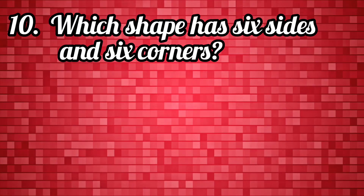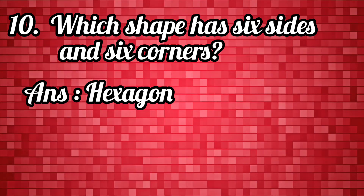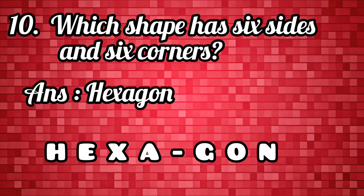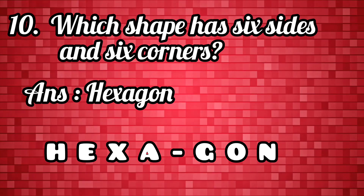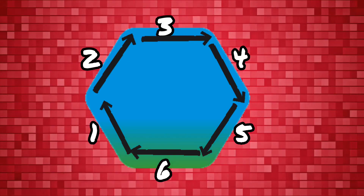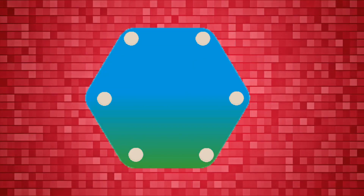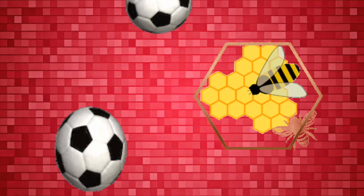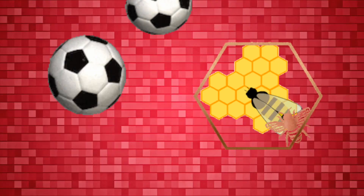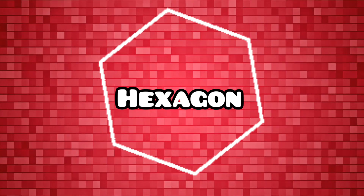Which shape has six sides and six corners? Hexagon. H-E-X-A-G-O-N. A hexagon has six sides and six corners. For example, a honeycomb. Hexagon.